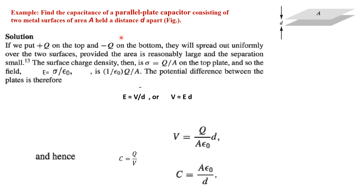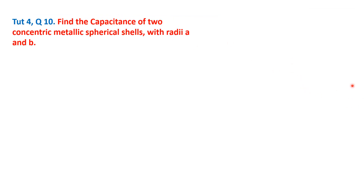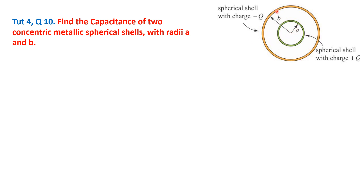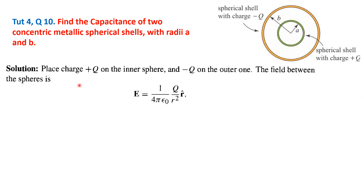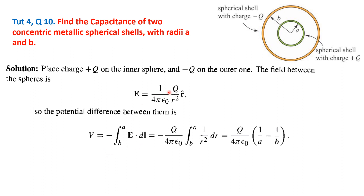Similarly, for two concentric spherical shells — an inner shell of radius A and an outer shell of radius B — if we place charge plus Q on the inner shell and minus Q on the outer shell, the electric field between them is E equal to (1/(4*pi*epsilon_0)) * Q/R² in the R-cap direction. The potential difference is found by integrating E dot dL from A to B, which gives V equal to (Q/(4*pi*epsilon_0)) * (1/A minus 1/B).